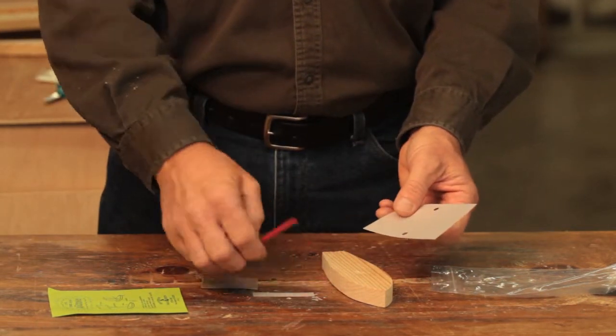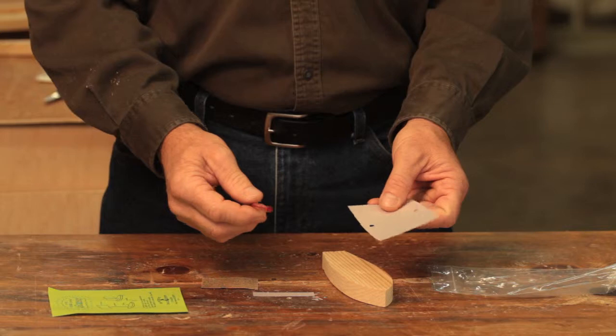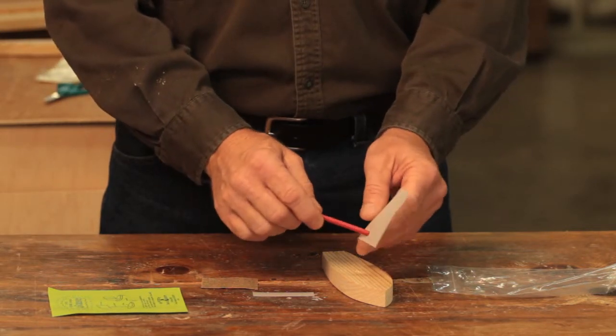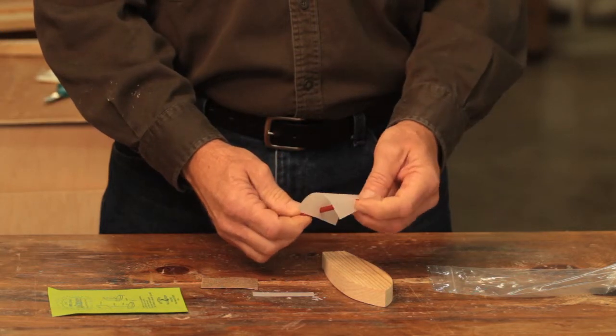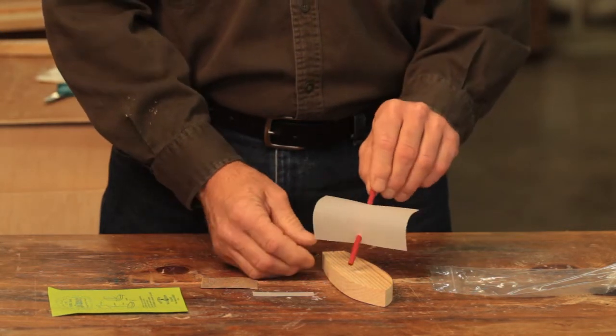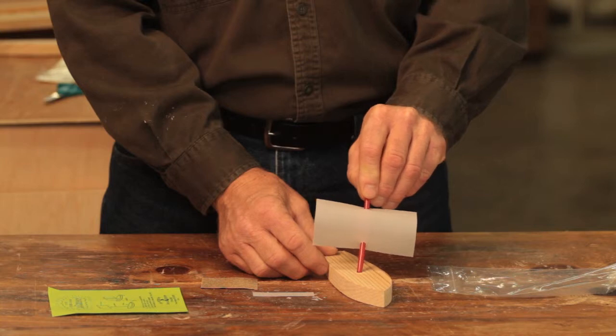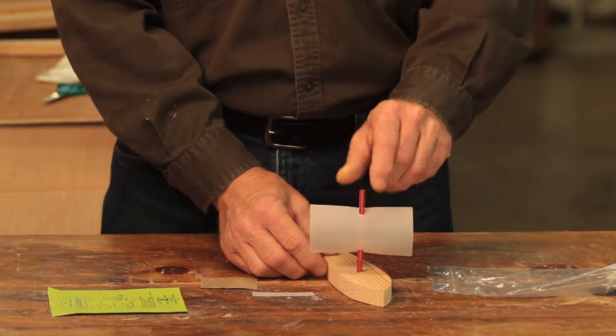First thing you want to do is take your sail and the mast and insert the mast through the holes in the sail, just like that, and then insert the mast into the hole in the hull.